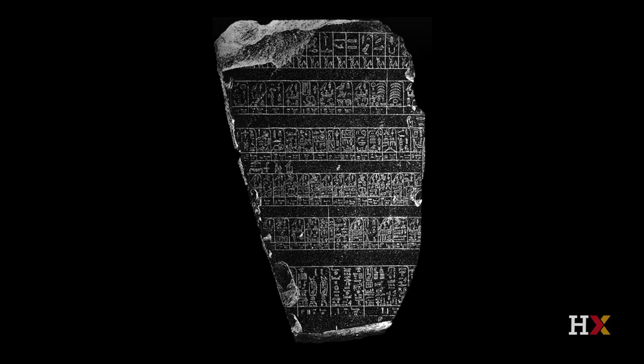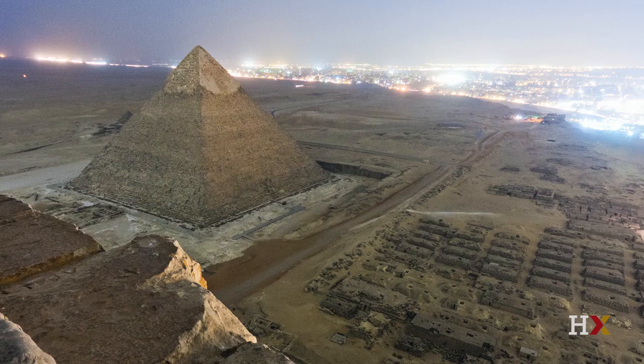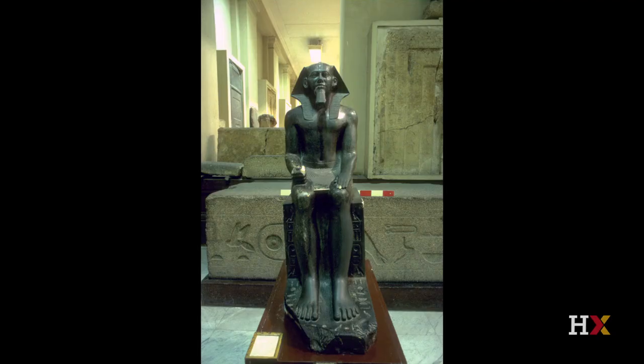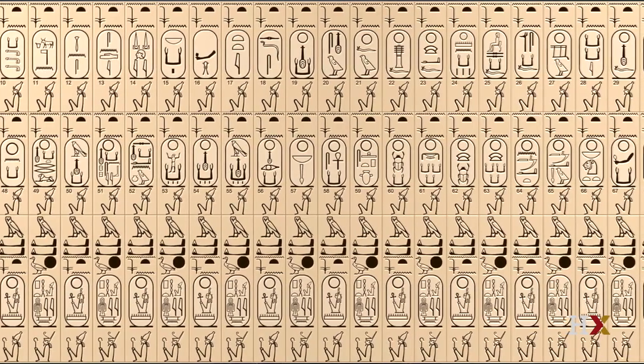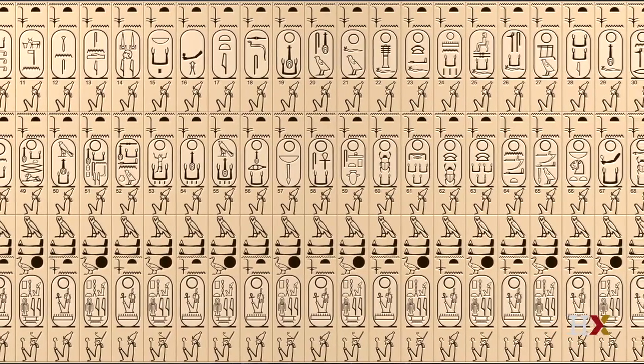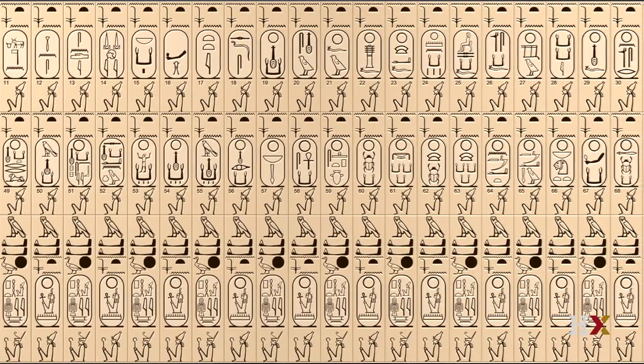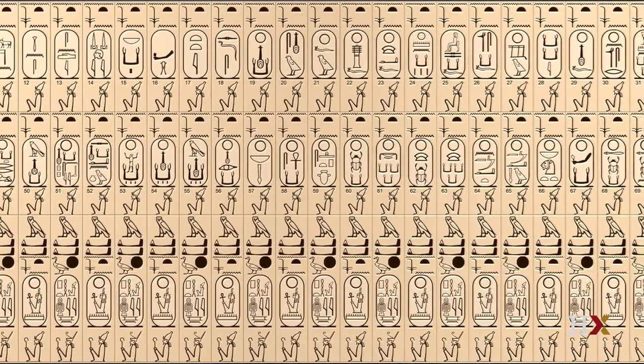The Old Kingdom roughly corresponds to the years 2649 to 2150 BCE, encompassing the third to sixth dynasties. The main sources used for the study of this period are king's lists, such as the Palermo Stone, private and royal tombs and their inscriptions, and private and royal statuary. King's lists are important resources, not only for dating periods of rule, but also to establish the chronological order of rulers.